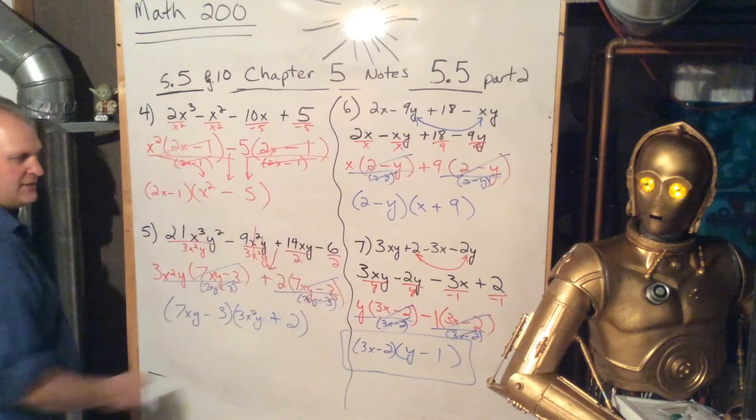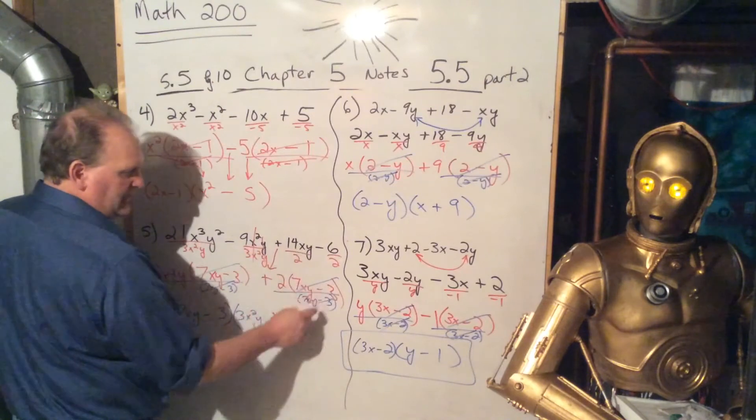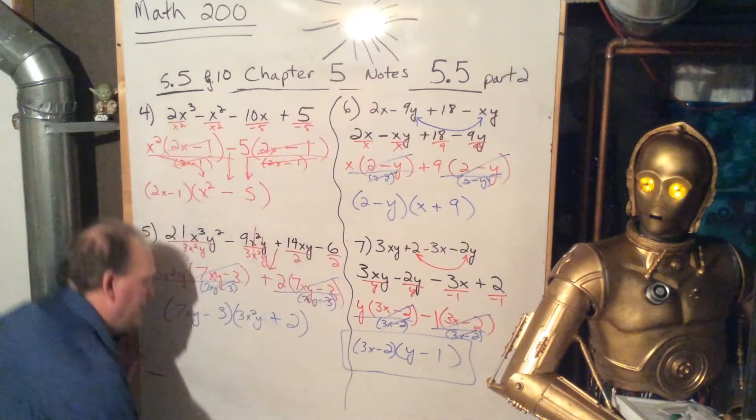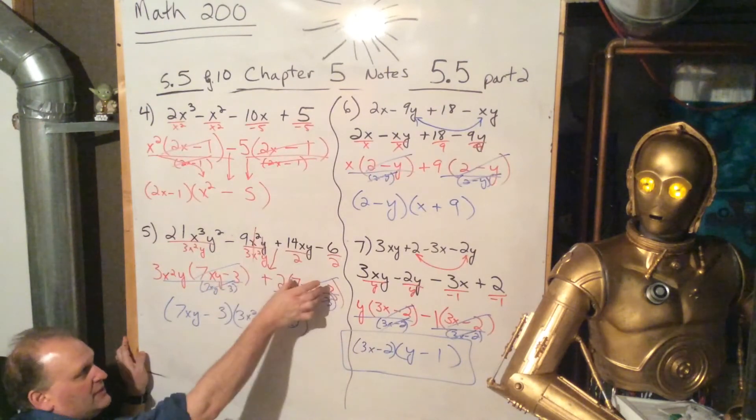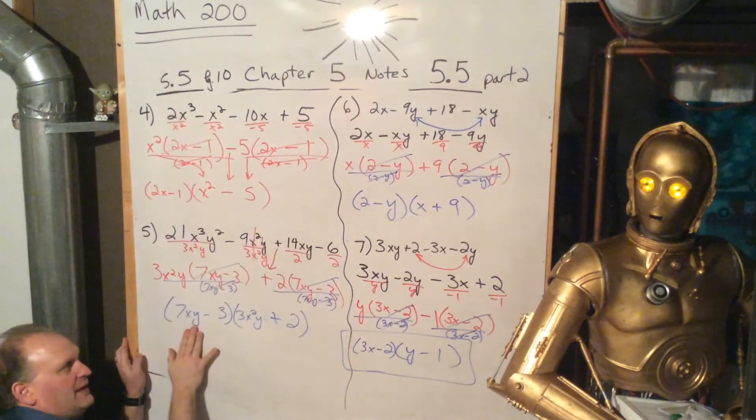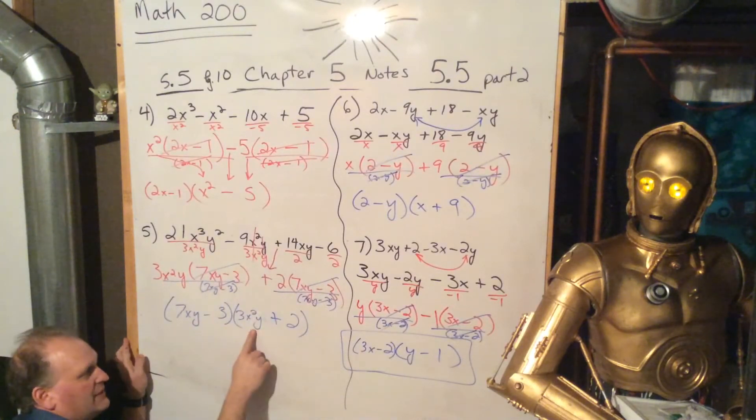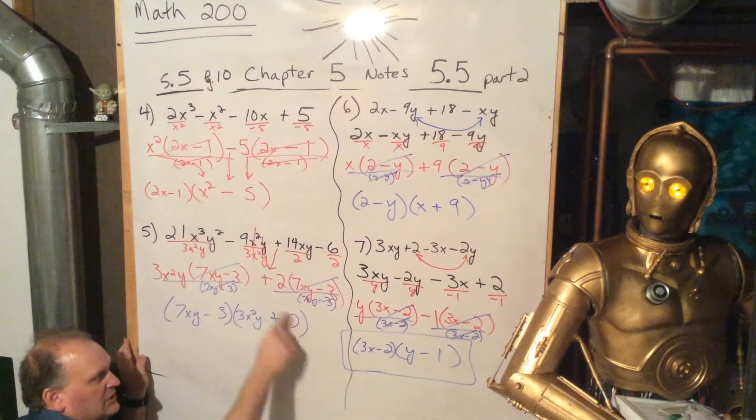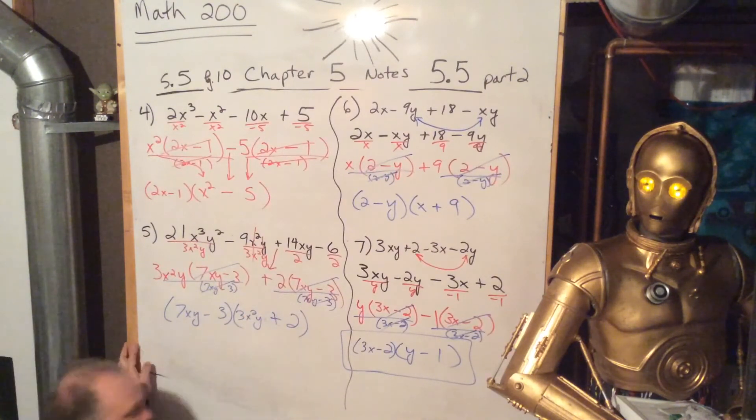You factor out a 2, pull that 2 out front, divide by 2, 7xy, and minus 3. And then, you look at 7xy minus 3, that gets factored out front. We write it underneath, cancel, end up with 3x squared y, write it underneath, cancel, end up with 2, plus 2 means right there. And so, that is our factored form.